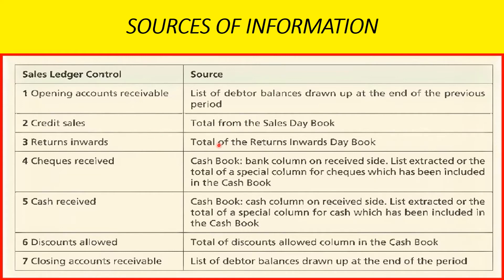Checks received from your debtors come from the cash book, and cash received from your debtors also comes from the cash book. Discounts allowed also comes from the cash book. The closing accounts receivable balance is normally calculated and then compared with the individual debtors' balances at the end of the period.